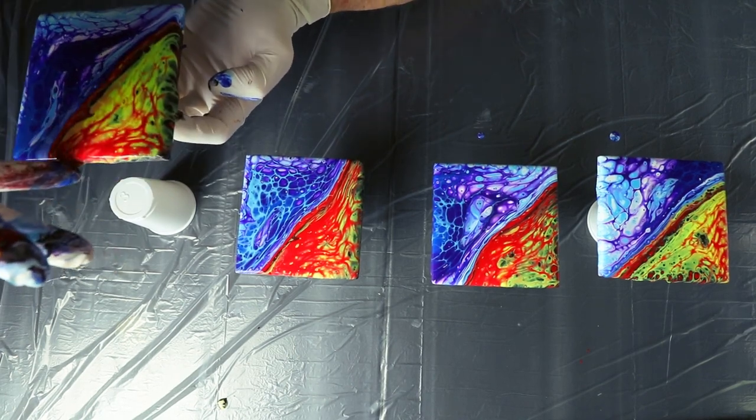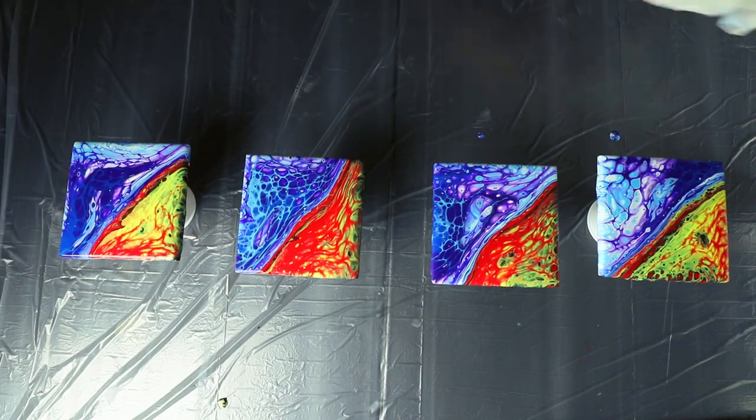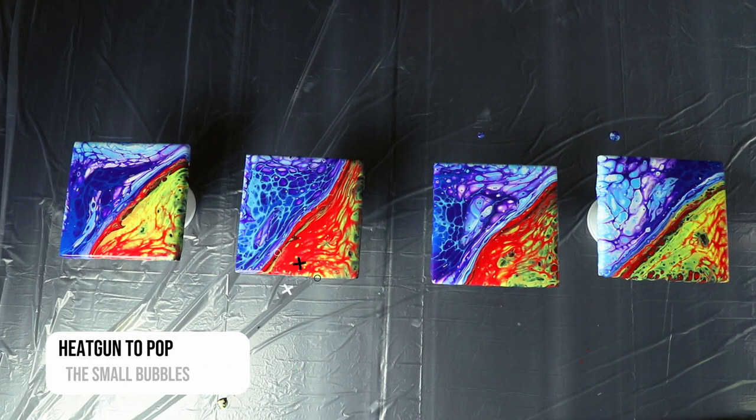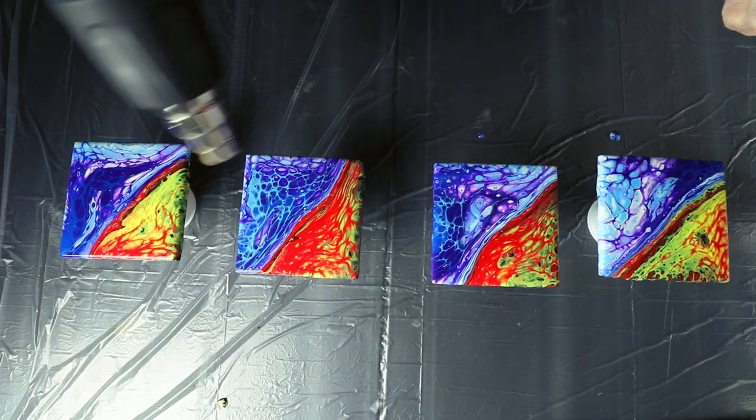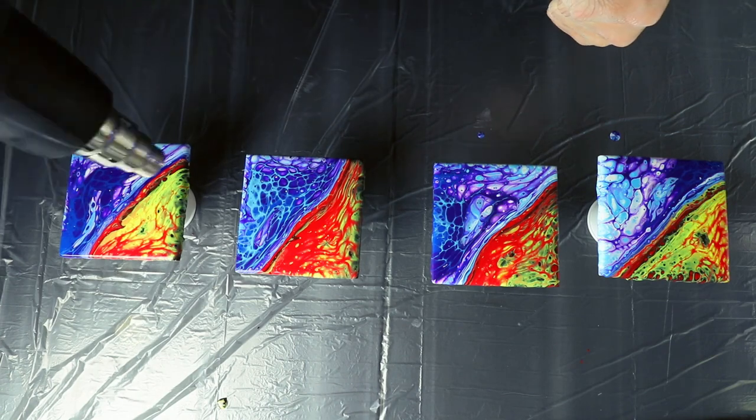So now I'm going to go ahead and grab my heat gun, pop any of these bubbles that are left on the surface. I was hoping that I'd get a little bit more cells pushing through with the silicone interacting, but I didn't get too much of that.